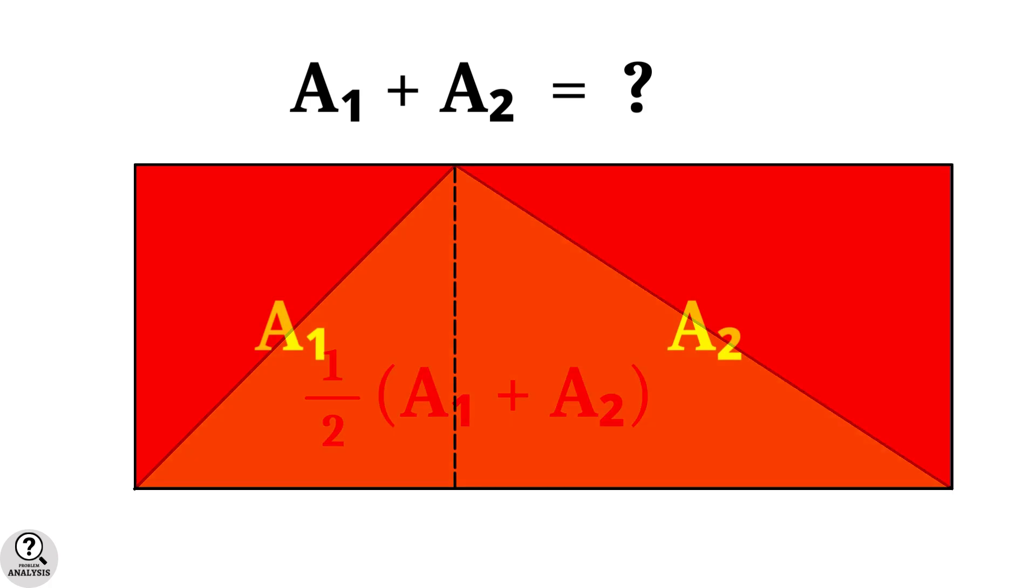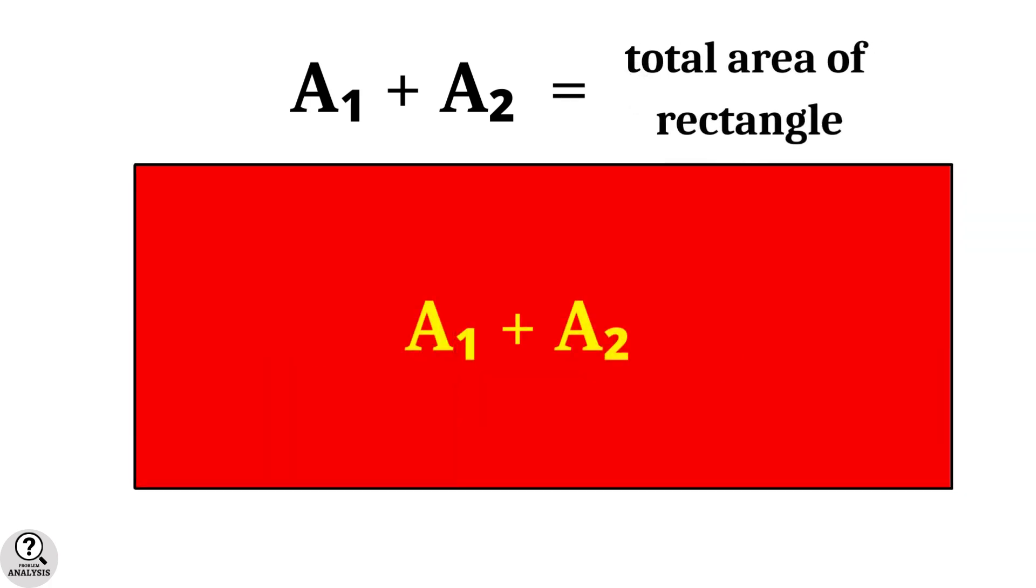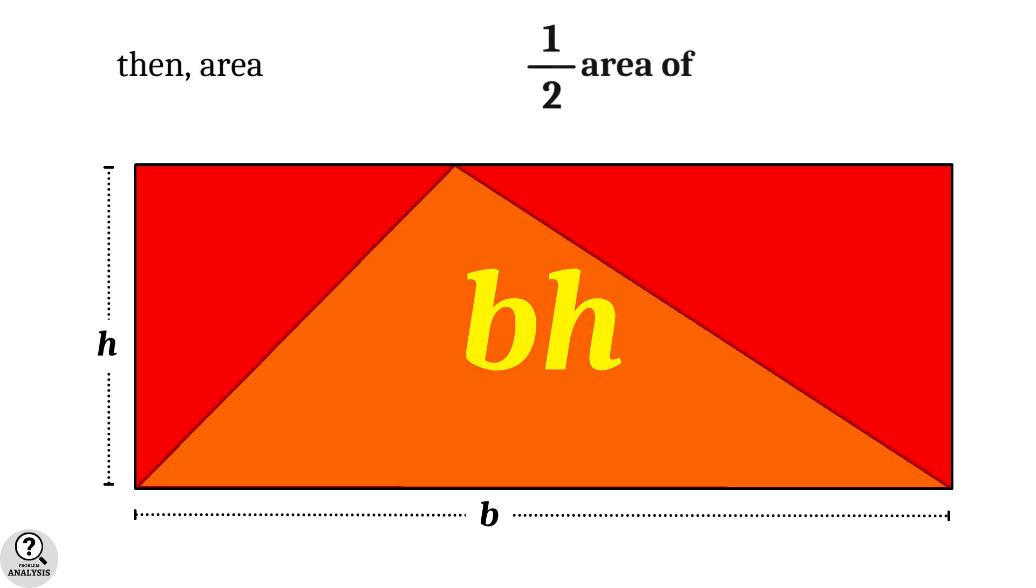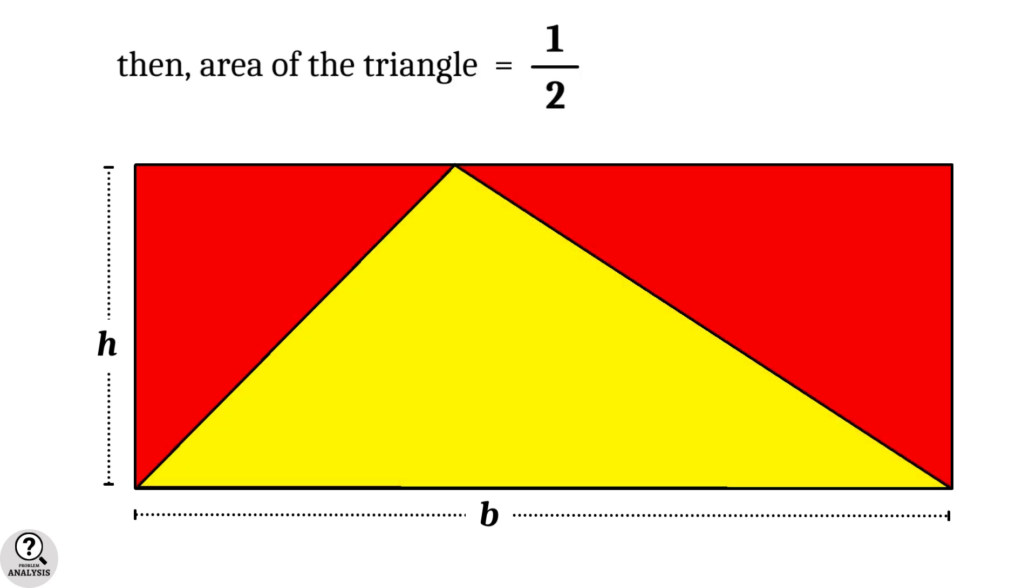It is nothing but the total area of the rectangle. Then what is the area of this rectangle? As we already know, the length is B units and the breadth is H units. Then the area of the rectangle is equal to B into H. That means the area of the triangle will be half of the area of the rectangle, which is equal to half BH.